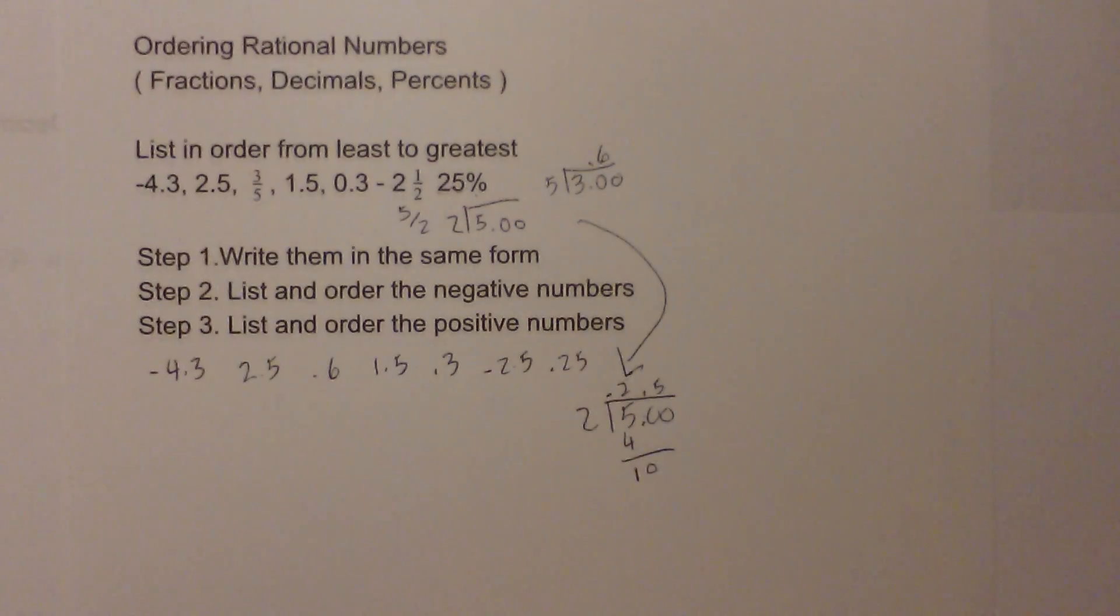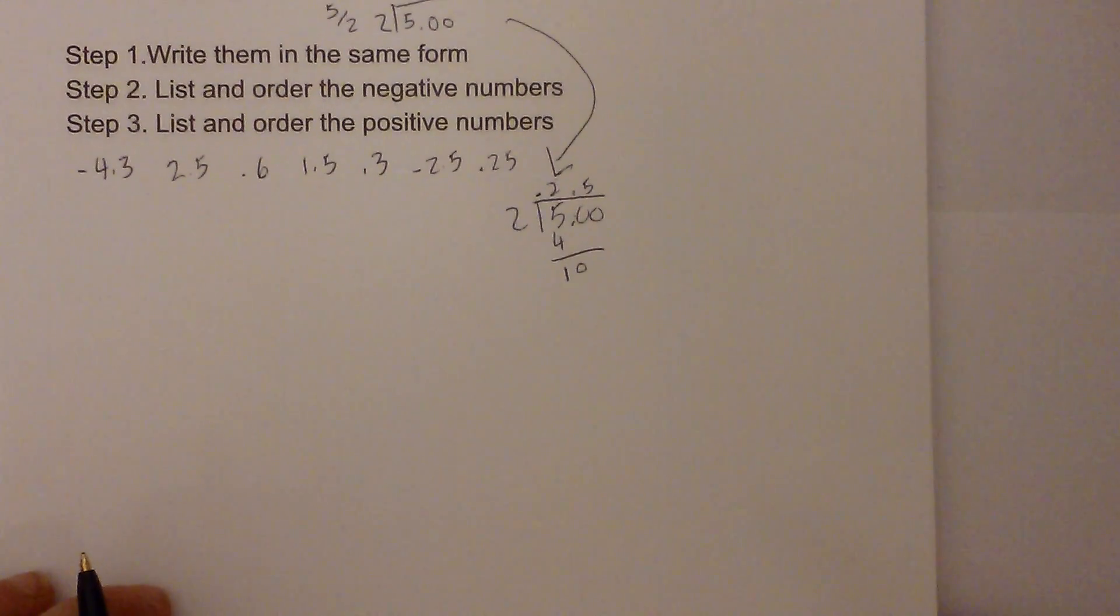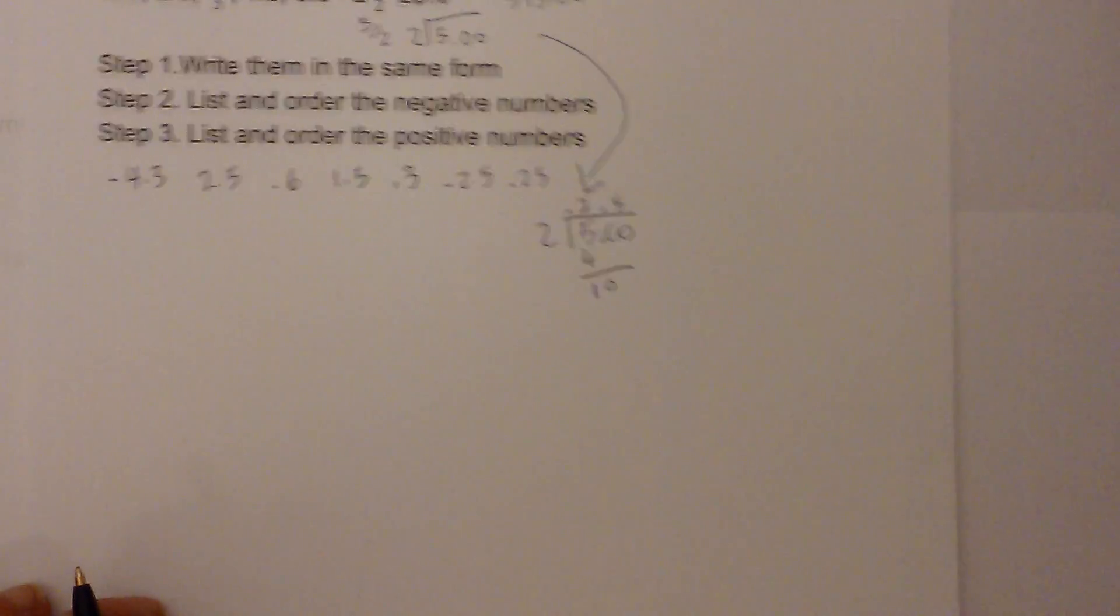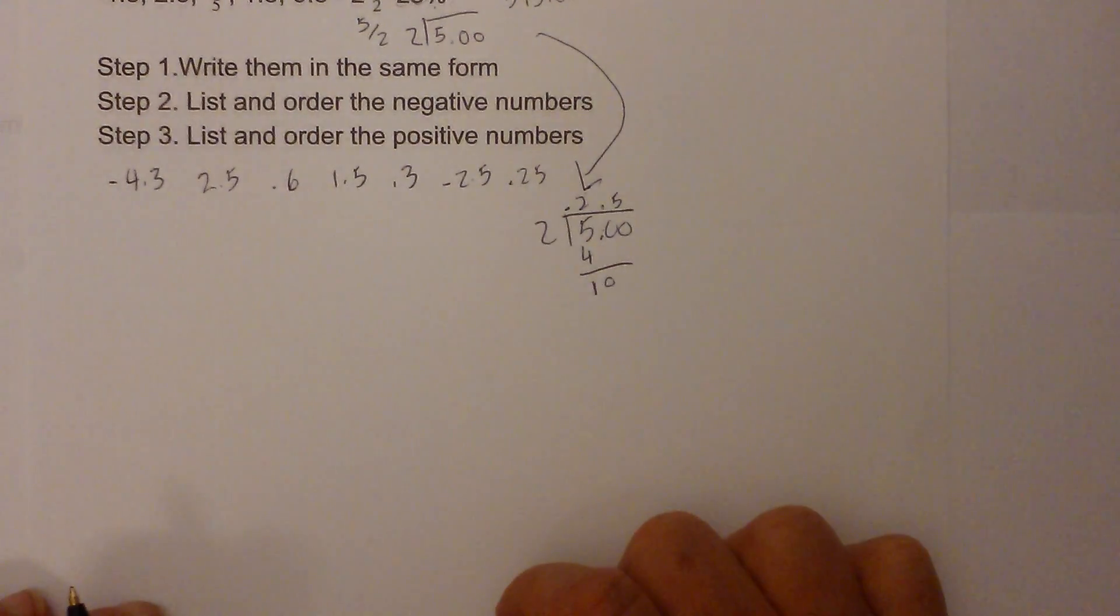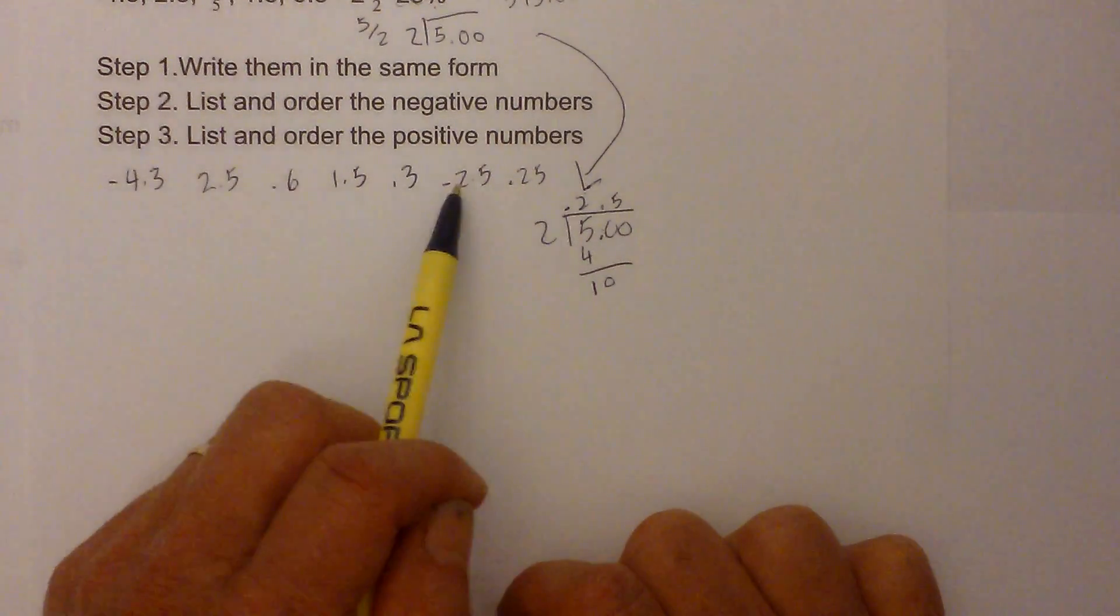Okay, so now I have my numbers. Now I have them in the same form, I now need to start listing them from least to greatest because they are in the same form.